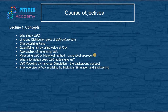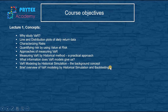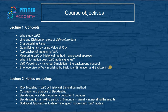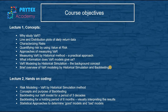We also use a practical approach to measure VaR for a particular period, do VaR modeling by historical simulation, and learn the algorithm and background concepts. We'll briefly visit the VaR modeling by historical simulation and backtesting, which will be covered in detail in Lecture 2 — where we build the model, backtest it for different periods, and deploy five different statistical approaches to determine good and bad models.